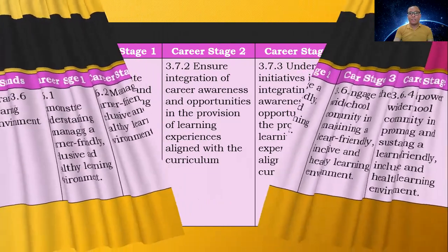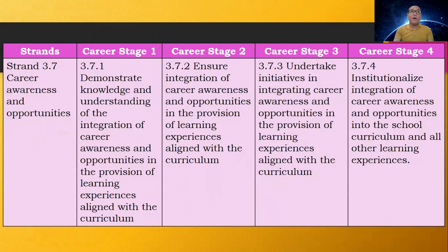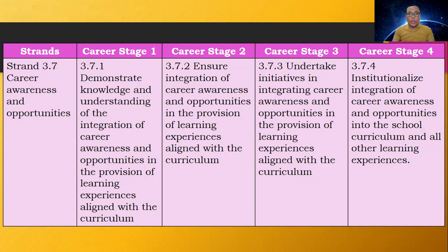Strand 3.7 — Career awareness and opportunities. K-12's career exit includes employment, entrepreneurship, or college. Career Stage 2 says: ensure integrative career awareness and opportunities in the provision of learning experiences aligned with the curriculum. In high school there is immersion or OJT. That immersion is important because not all learners will go to college. We hope they acquire skills and competencies so that even if they don't pursue college, they can work. If they do go to college, you are proud when they become professionals. When they work, they become productive — they help their families, they help the economy, and contribute to GDP and GNP, which contributes to nation building.